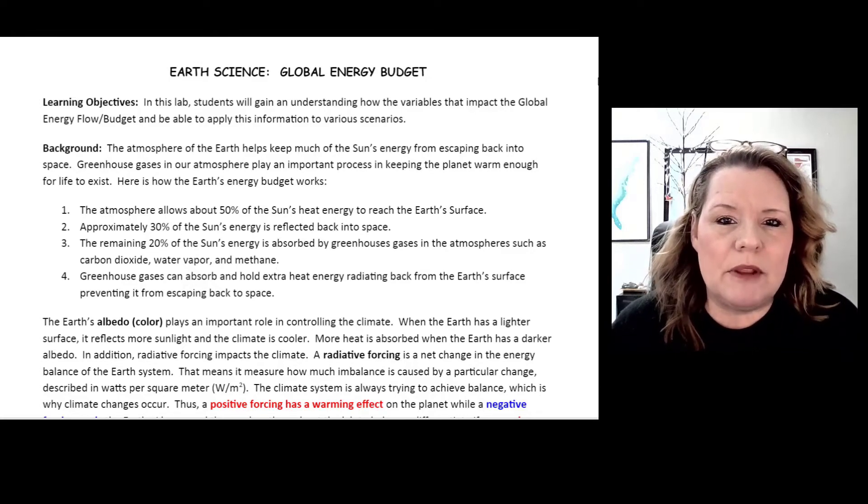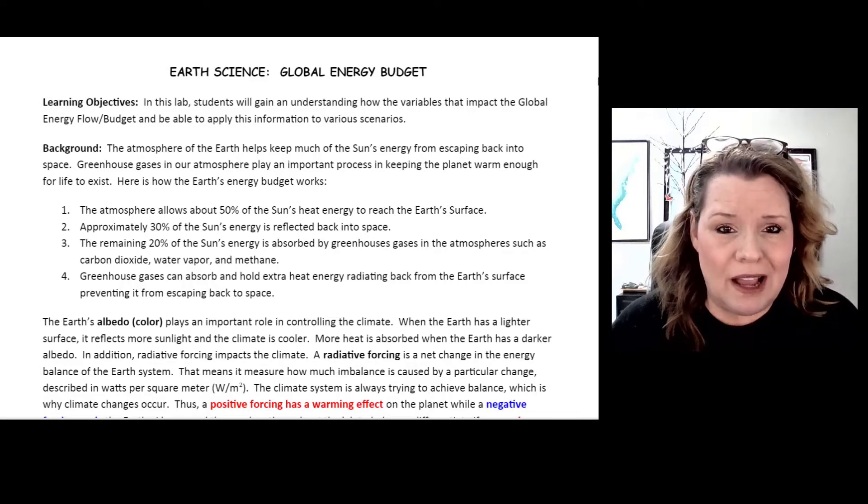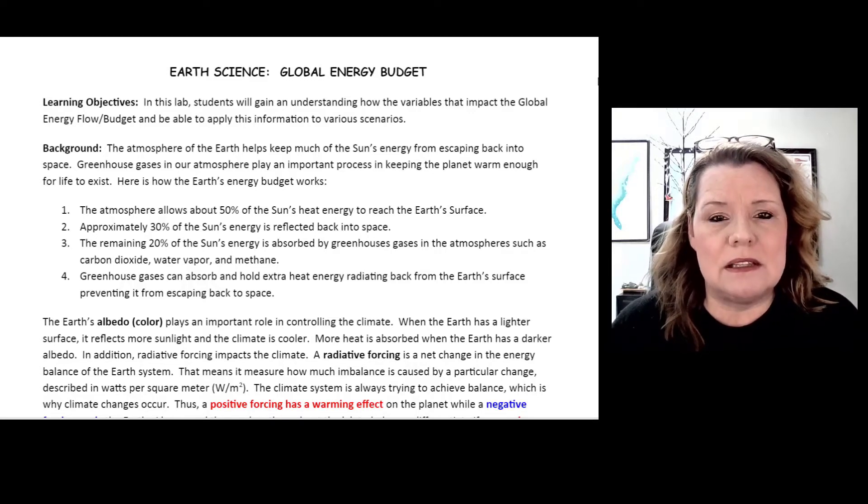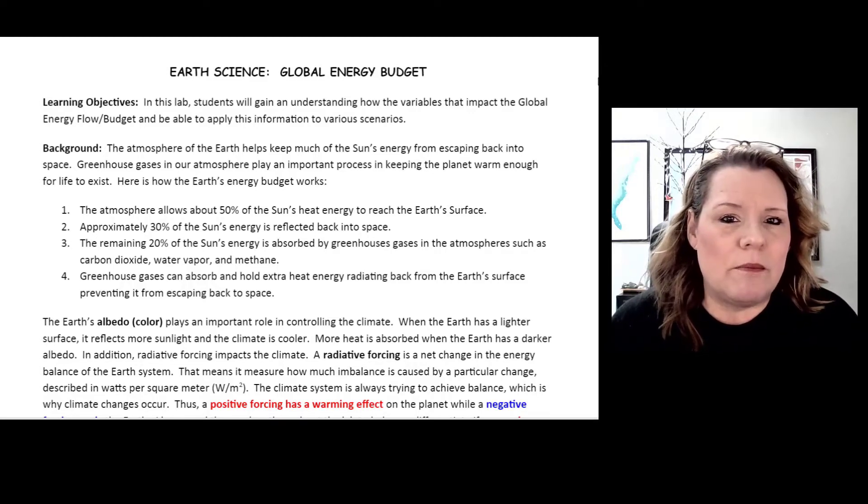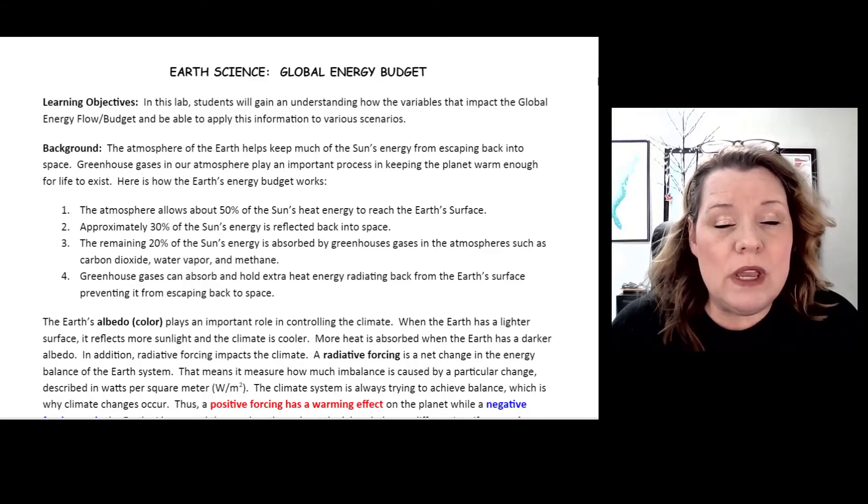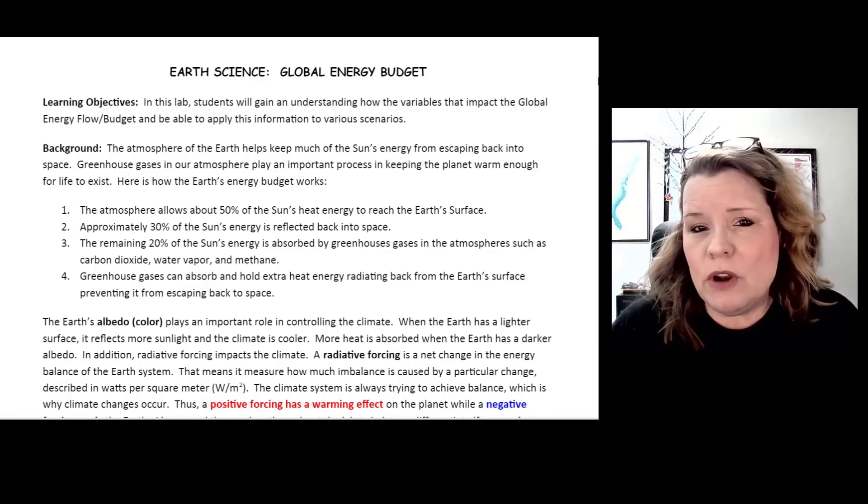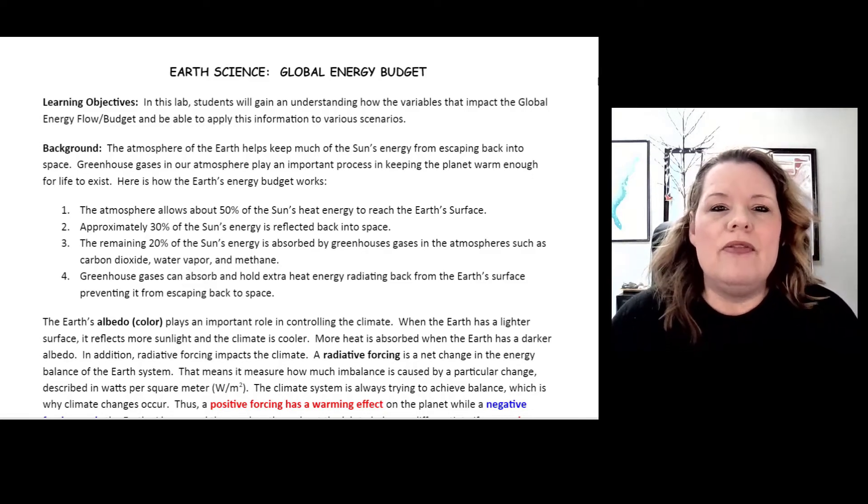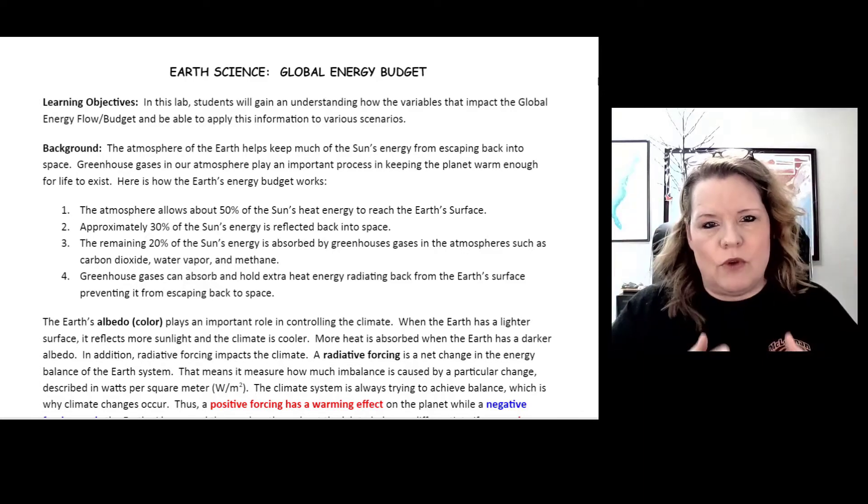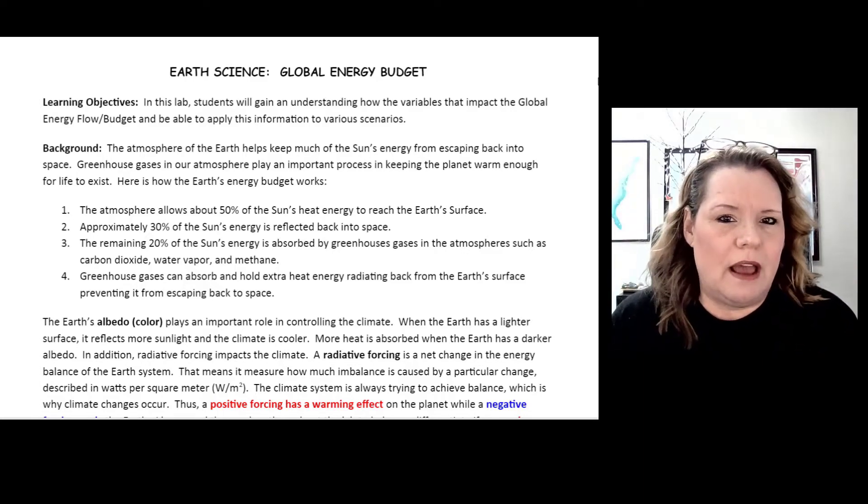Albedo in climate change refers to how reflective the Earth's surface is. If we have a really dark surface that's covered by, let's say, tropical rainforest, that's going to be very green, very dark. That would allow for more solar radiation to be absorbed at the surface.